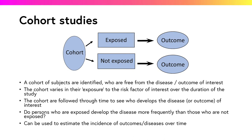In cohort studies, a cohort of subjects are identified who are free from the outcome of interest or disease. They are then followed up over a period of time, during which they will have varying levels of exposure to the risk factor of interest, and some will develop the outcome of interest. We are then able to examine whether people who are exposed develop the disease more frequently than those who are not exposed.